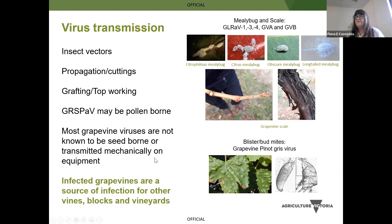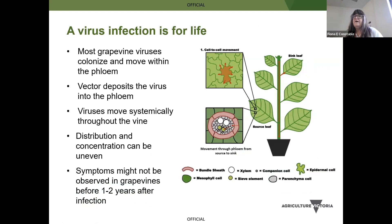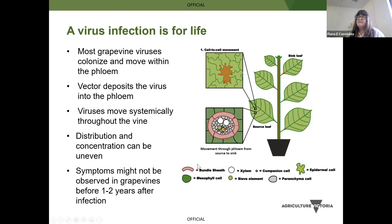Once you've got the infection, it is absolutely for life. Viruses move within the vascular tissues of grapevines in the phloem and distribute throughout the grapevine, although they can be unevenly distributed or in uneven concentration, which impacts on detection. A vector will deposit the virus directly into the phloem and then it moves systemically. You might not see symptoms for one to two years after an infection event. Similarly, if you graft — once the vascular tissues connect — the viruses move between the vascular tissues throughout the vine and can cause grafting incompatibilities.